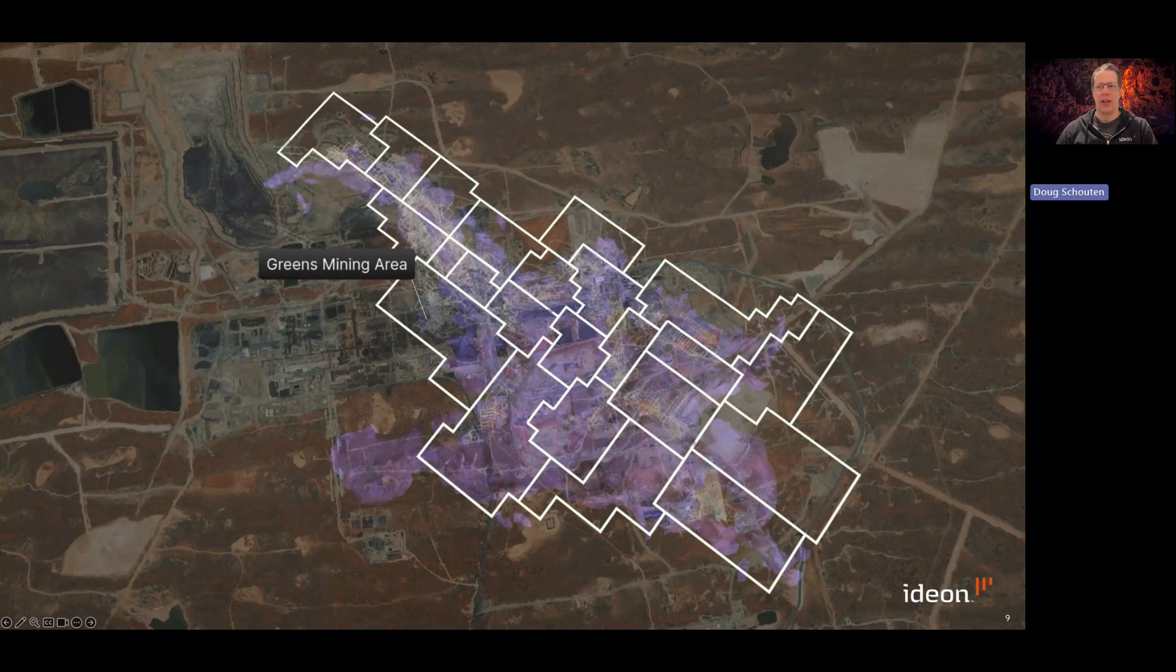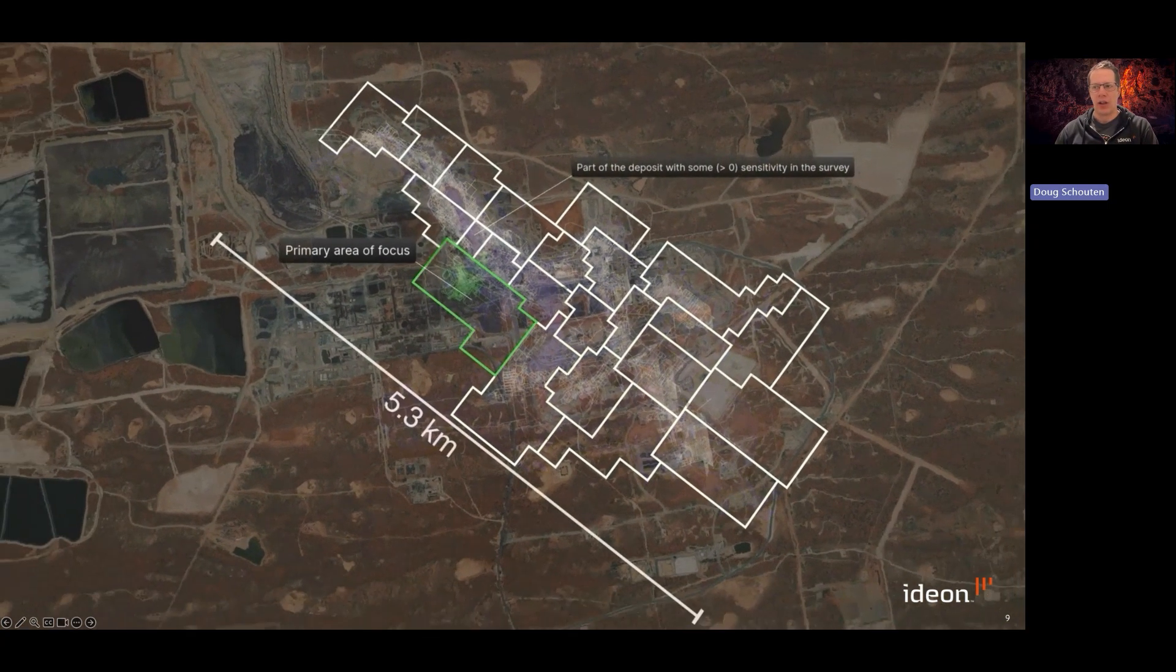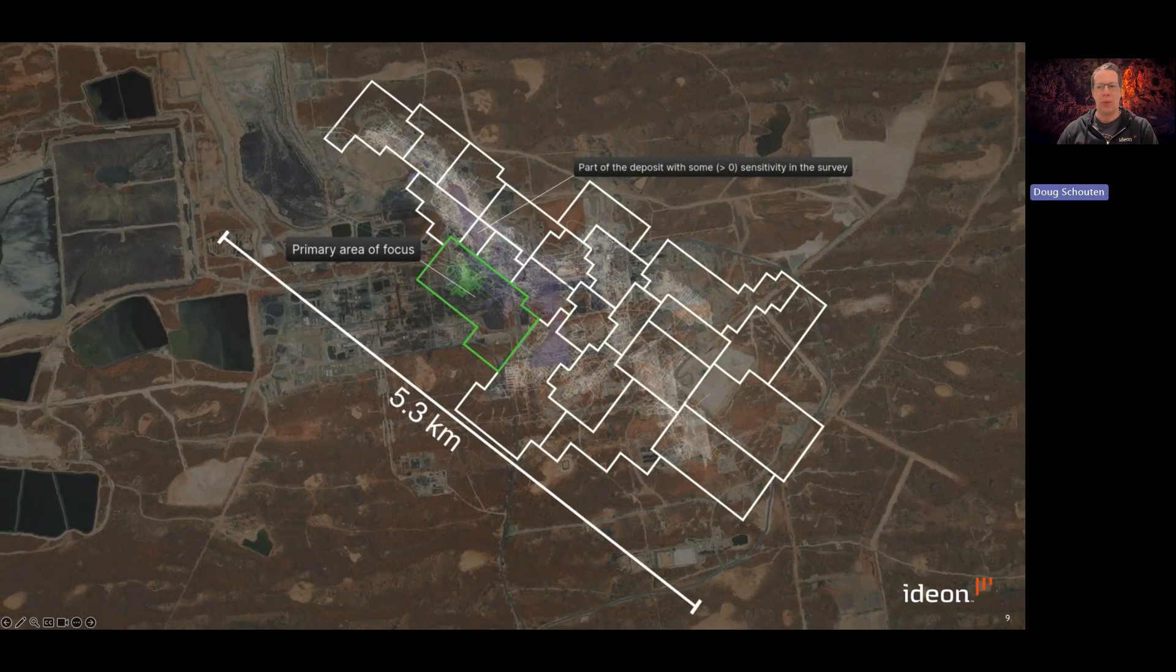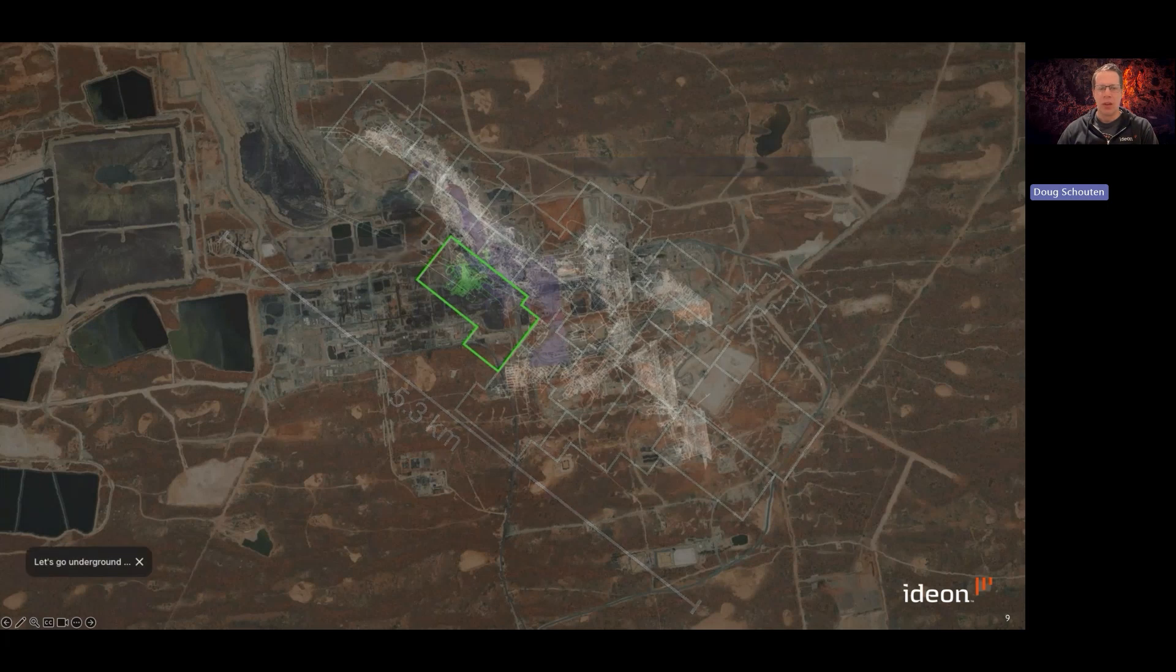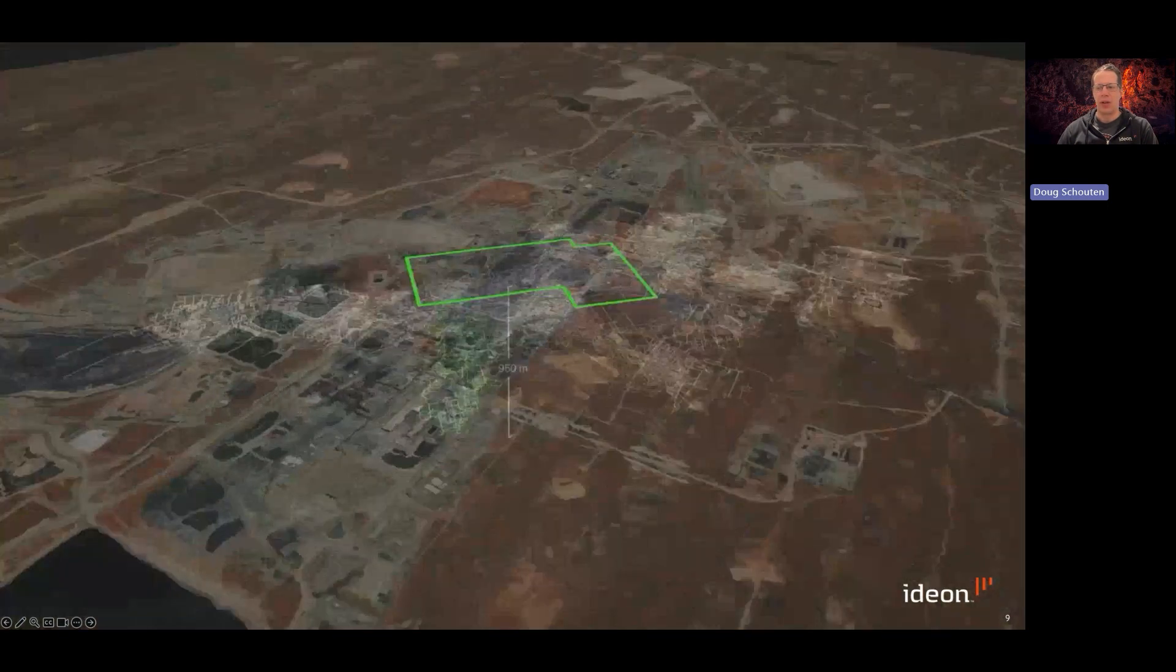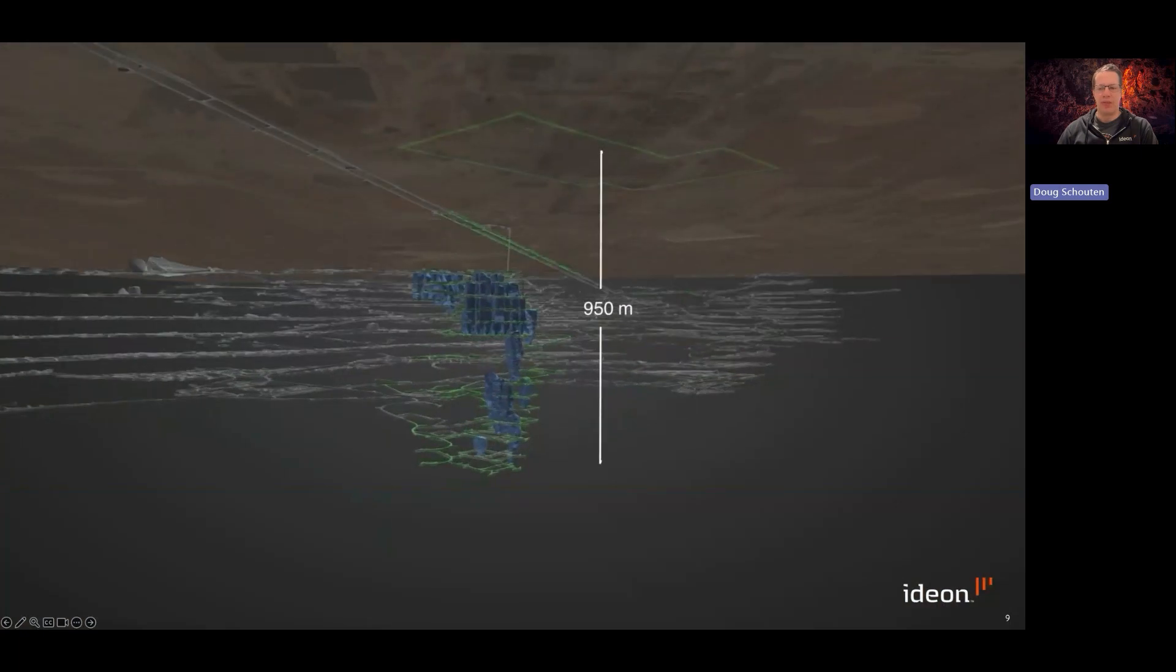But that's because the Olympic Dam mineral deposit is also very large. So plan view here shows the general shape of that deposit divided into various mining areas. The area of focus for us was the Greens mining area.